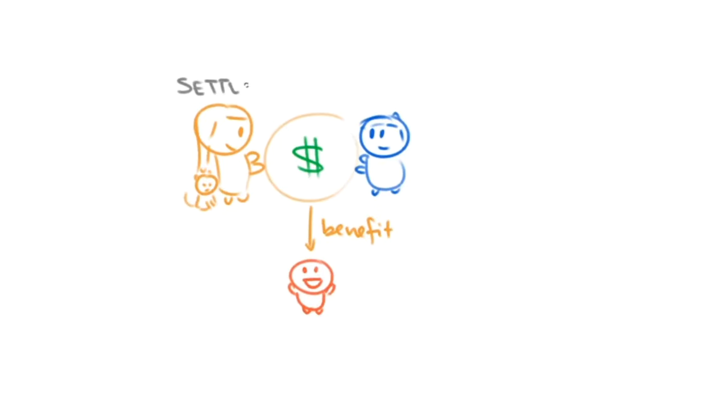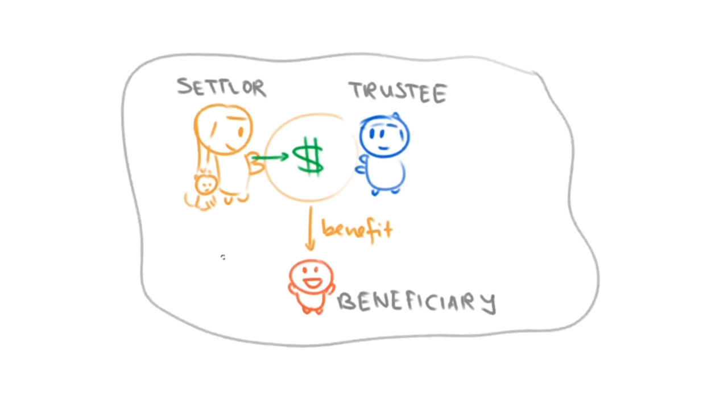So that's all we'll be talking about today. In today's video, we gave names to the three parties of the trust: the settler, trustee, and beneficiary. We also explored some fun examples regarding breaches of trust.